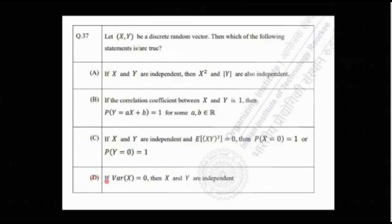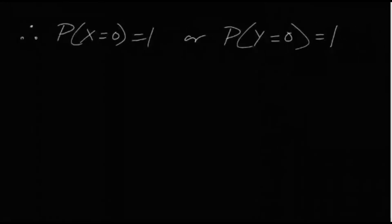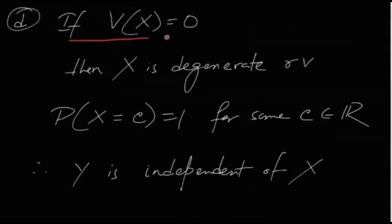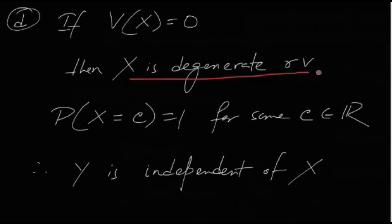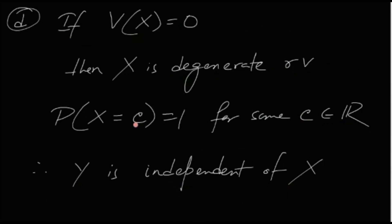Option D: if Var(X) = 0, then X and Y are independent. This is easy — Var(X) = 0 means X is a degenerate random variable, so P(X = c) = 1 for some real number c. Y is obviously independent of X because X always takes the value c with certainty, so it doesn't matter to Y.